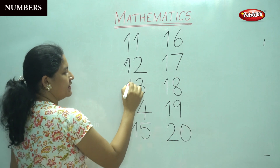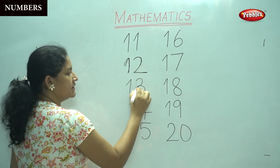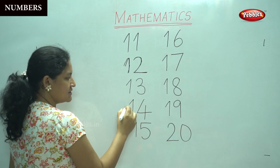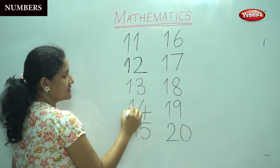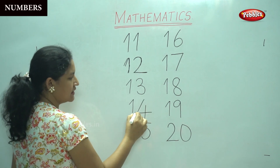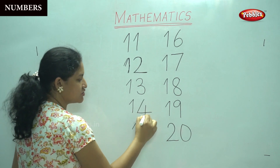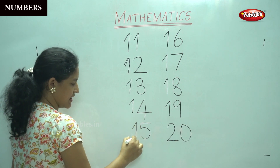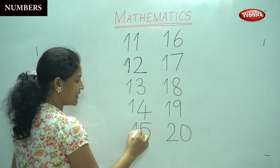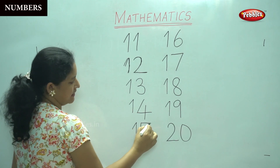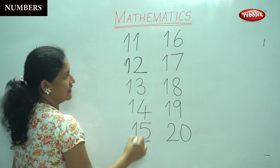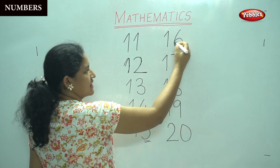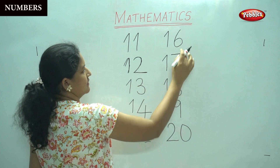This is number 12. A slanting line, a straight line, a curve and another curve down. This is number 13. A slanting line, a slanting line, a slanting line, a straight line for number 15. This is number 15. A slanting line, a straight line for number 1, a straight line, a curve and a sleeping line. This is number 15. A slanting line, a straight line, a curve that joins together — this is number 16.